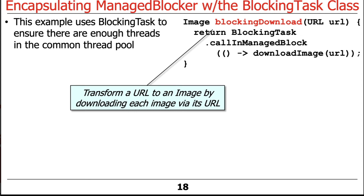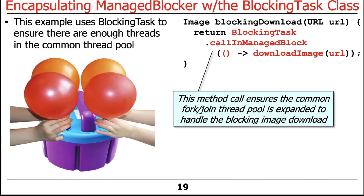Here's the method — it's called blockingDownload. You pass it a URL and get an image back. It calls BlockingTask.callInManagedBlock, which is that outermost method we looked at, and that turns around and calls the downloadImage method. downloadImage blocks until the image is downloaded. By putting this in the context of callInManagedBlock, it ensures that the common ForkJoinPool will be automatically expanded to handle the blocking image download, which it most likely will perform.